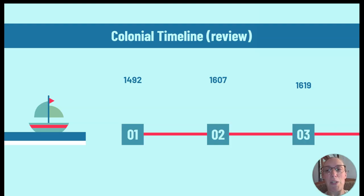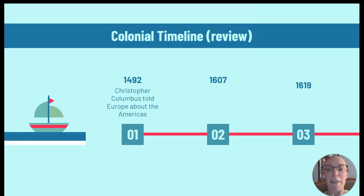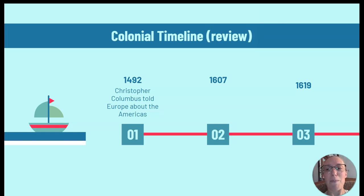Before we jump into the types of government, let's do a quick review of events you probably have already heard about. So in 1492, Christopher Columbus told Europe about the Americas — though millions of people already lived in the Americas and knew they were here. It was just that Europeans didn't know the Americas existed.